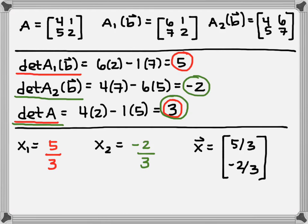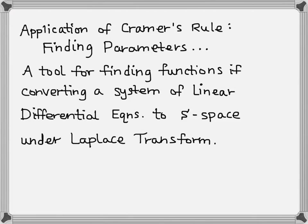Now I could do the same thing with a larger system — it would just take more work to figure out each individual determinant. Let's look at one application where you might actually use this in engineering. An application of Cramer's Rule is in finding parameters. This is used in differential equations — it's a tool for finding functions when converting a system of linear differential equations to S space under Laplace transforms. If you're not in differential equations, that's okay; we're only going to focus on the linear algebra step of this process.